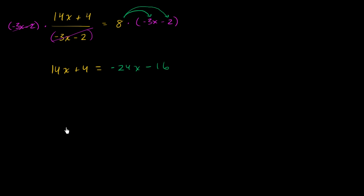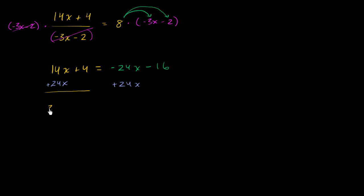The first thing I want to do is put all of our x terms on the left-hand side. I want to get rid of this negative 24x on the right, so I'm going to add 24x to both sides. On the left-hand side, 14x plus 24x is 38x, and then we still have the plus 4.